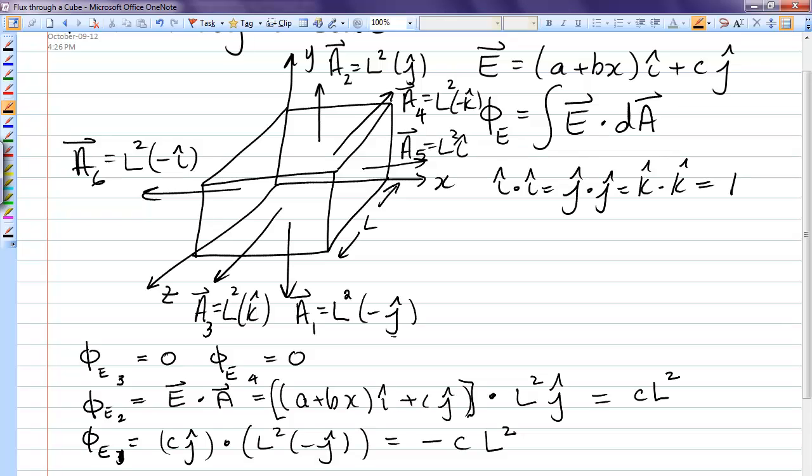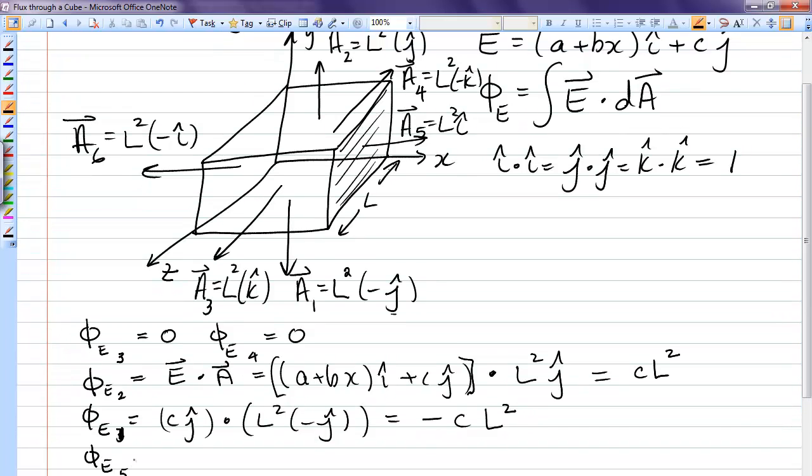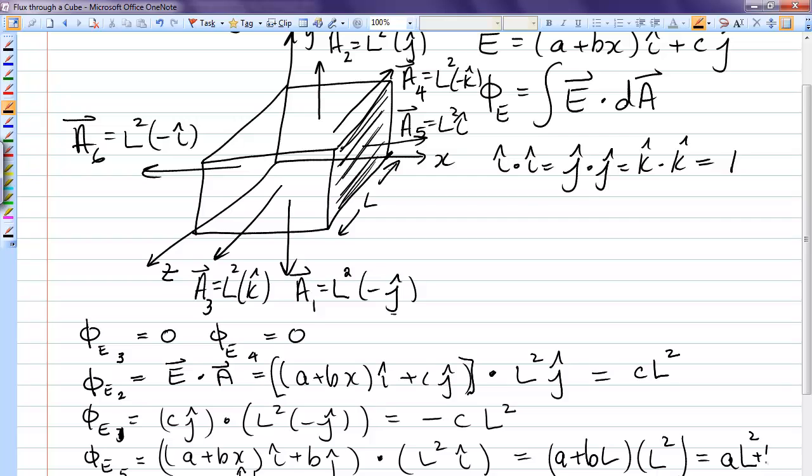So so far we have no flux from top, bottom, front, back. Where we are going to pick up some flux is on this side face. Now this has an i hat. So a5 has an i hat component. So phi e5 will be a plus bx i hat plus c j hat dot L squared i hat. Now you still may be wondering whether or not we need to integrate. When you look at this expression, first of all, we're just going to pick up the i hat part of the electric field. You have to decide, is x constant on that face, or is x going to be changing on that face? So when we go up and look at this right-hand face, you can see that x is constant. x equals L on the entire face. And so we don't have to integrate. We just simply sub in for x, L. So this becomes a plus b L times L squared. So that's a L squared plus b L cubed.